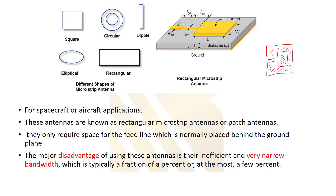These antennas are used for spacecraft and aircraft applications. They are known as microstrip antennas and only require space for the feed line, which is normally placed behind the ground plane — at the back of the dielectric. However, they have a disadvantage: these antennas are inefficient and have a very narrow bandwidth, typically a fraction of a percent or at most a few percent. This means they can only be used at one specific frequency, not across a wide frequency range.